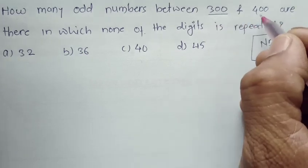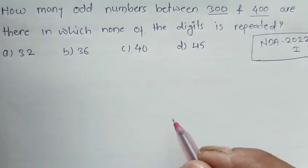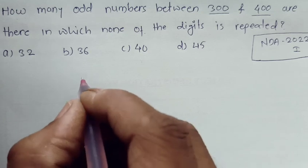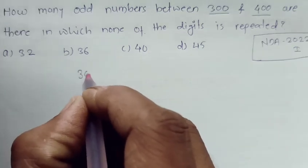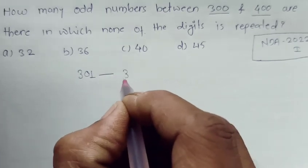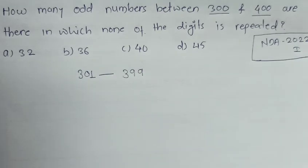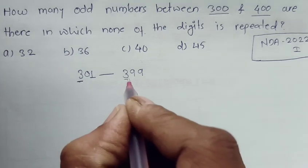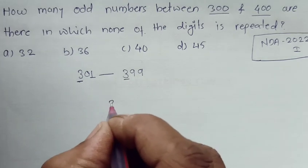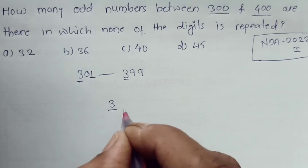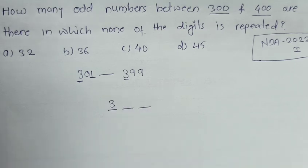We want odd numbers from 300 to 400, meaning the numbers will definitely lie below 400, ranging from 301 to 399. If we observe, the hundredth place will be constant and it is 3. So if I keep this 3 constant, the remaining two positions - in how many ways can we fill them? That is what they are asking.